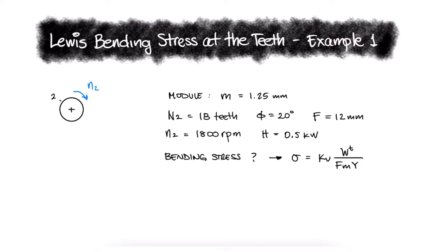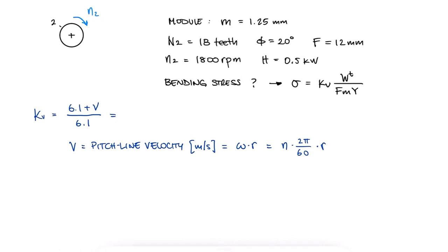The velocity factor for a cut or milled profile has a specific expression for metric units. Capital V is the pitch line velocity in meters per second. The pitch line or tangential velocity is the angular velocity times the radius, which is the same as the RPM times 2π over 60 times the radius. Since the module is the pitch diameter divided by the number of teeth, we find a pitch diameter of 22.5 mm.